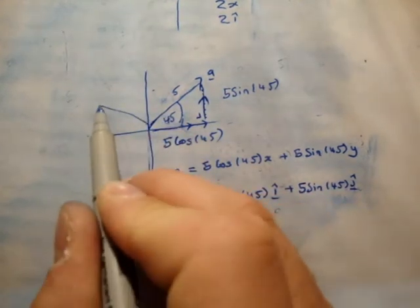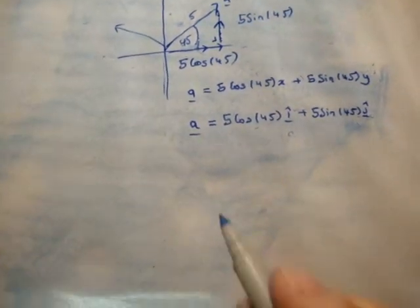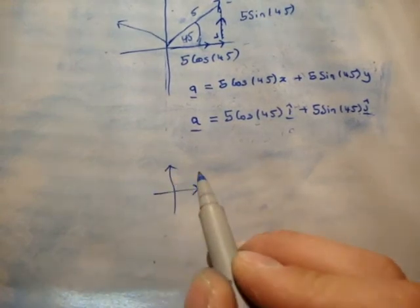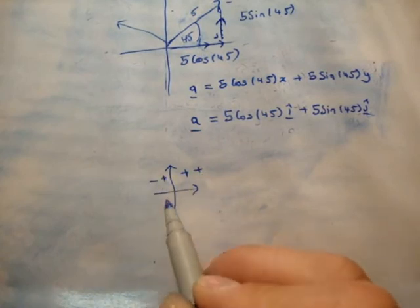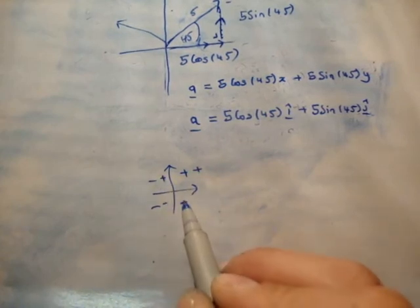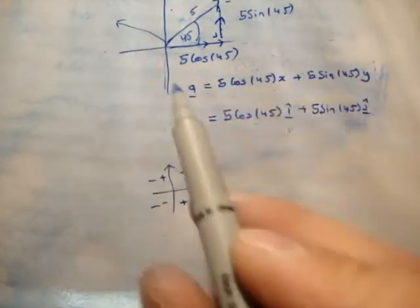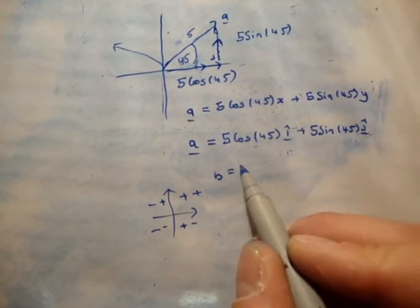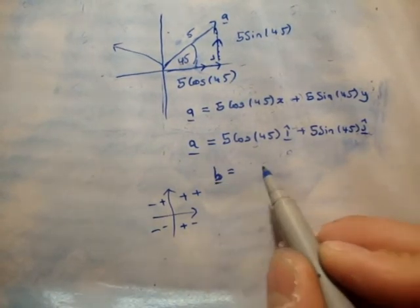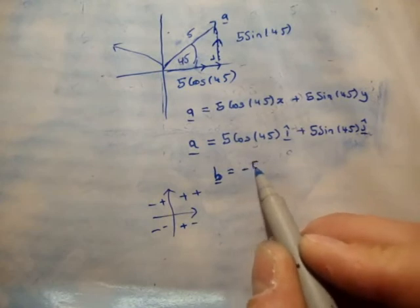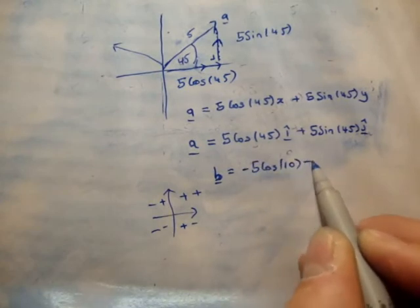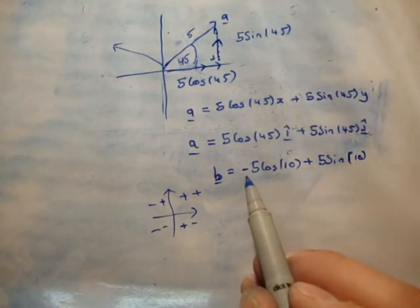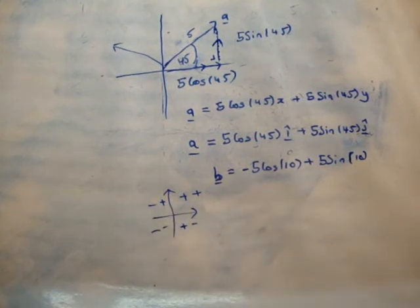Just remember to look at the signs of the different component vectors depending on where the resultant points. In the first quadrant it's plus x, plus y. In the second quadrant it's minus x, plus y. In the third quadrant it's minus x, minus y. And in the fourth quadrant it's plus x, minus y. For example, a vector in the second quadrant might read: 5b equals minus 5 cos 10 plus 5 sine 10 — notice the signs because it's in minus x and plus y.